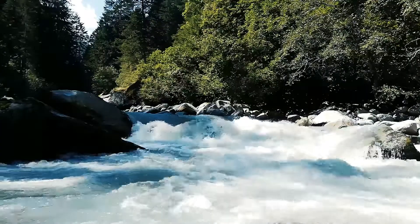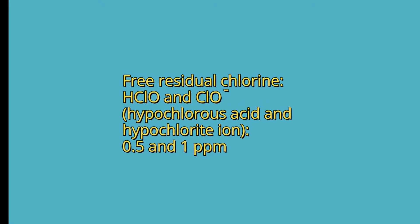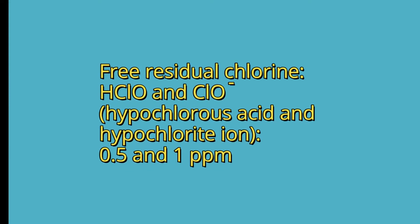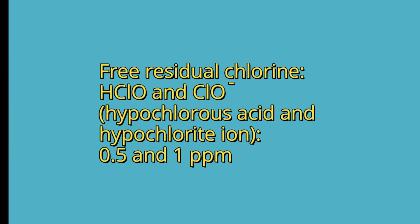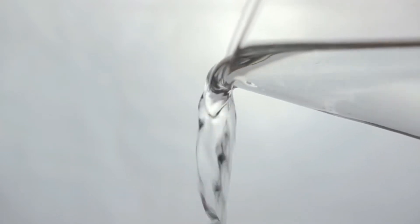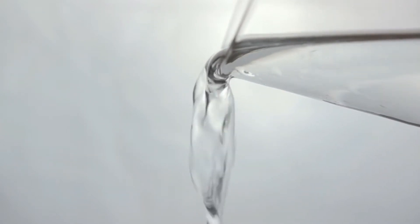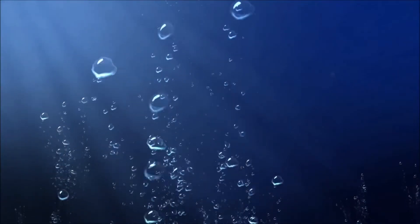After water treatment, the free residual chlorine content — hypochlorous acid and hypochlorite ion — must be between 0.5 and 1 ppm to prevent further contamination of water along the route to consumers. Knowing the active chlorine content that remains after chlorination allows guaranteeing its microbiological quality. After disinfection, the water must contain the minimum content of free residual chlorine.